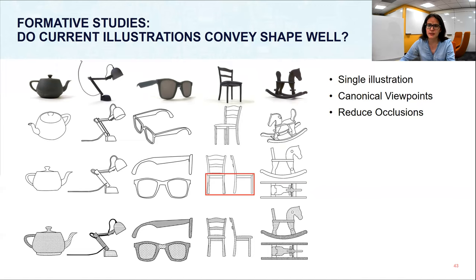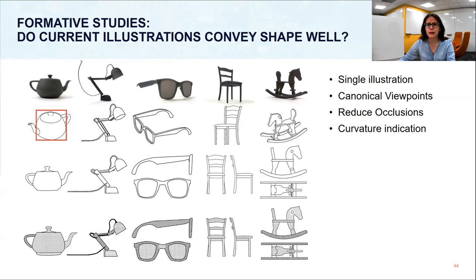Participants perceived occlusions as mistakes — for example, one participant mentioned for the chair: 'I really wish this chair has four legs, even though only two are shown here.' Finally, surface curvature is not illustrated accurately, and careful line placement could improve upon it — for example, the main container of the teapot seemed more spherical in the non-canonical rather than the canonical viewpoint. Based on these findings, we design illustrations differently than before.